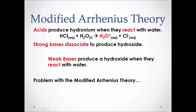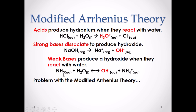HCl loses a hydrogen and gives it to water, forming our products H3O+ and Cl-. In the Modified Arrhenius Theory, strong bases remain the same and still dissociate to produce hydroxide. For weak bases, they also produce hydroxide when they react with water. Our chemical equation shows NH3, our base, reacting with water. Water loses a hydrogen and gives it to NH3, resulting in the products OH- and NH4+.